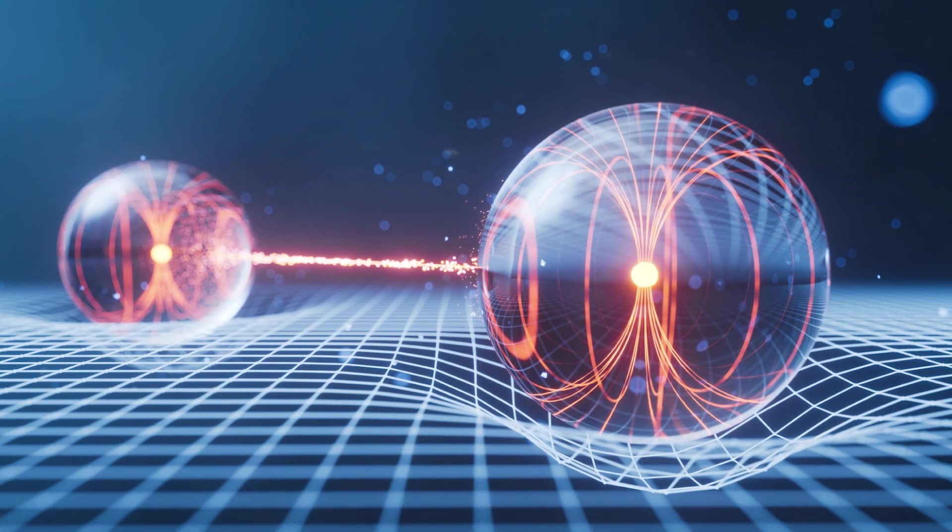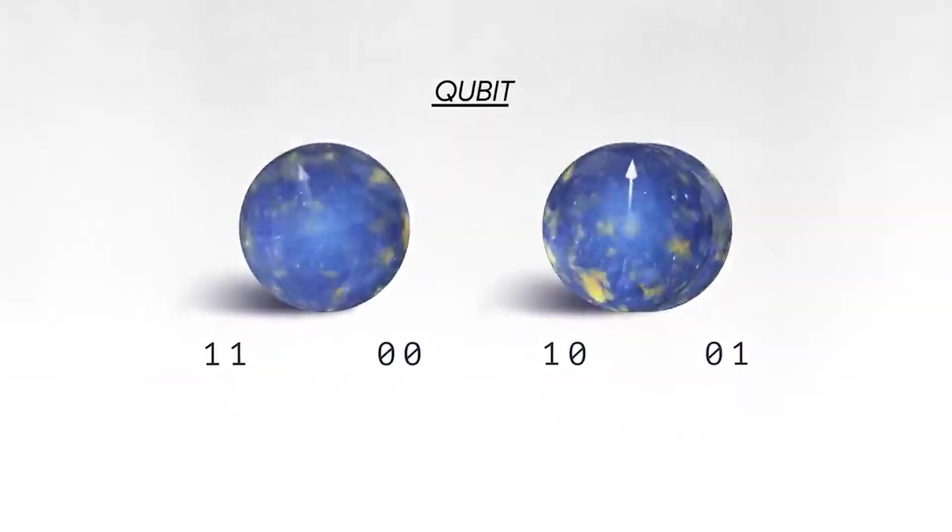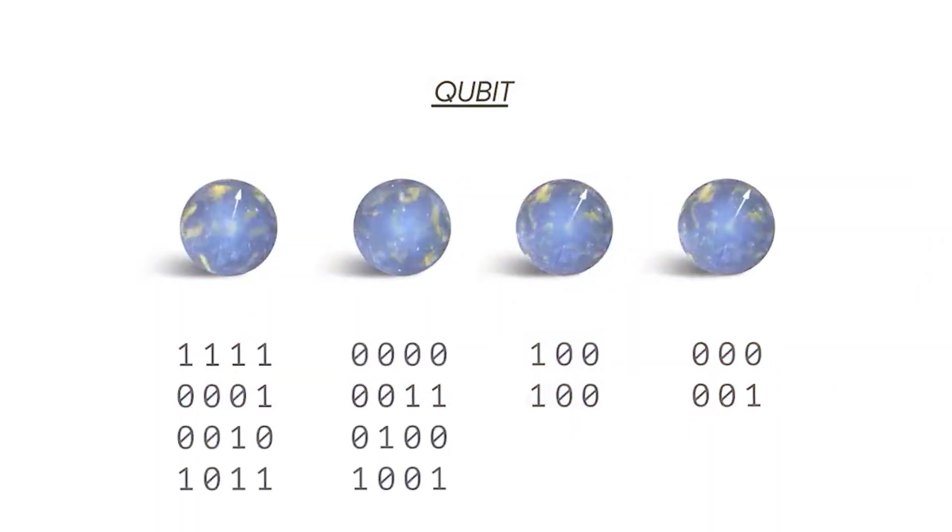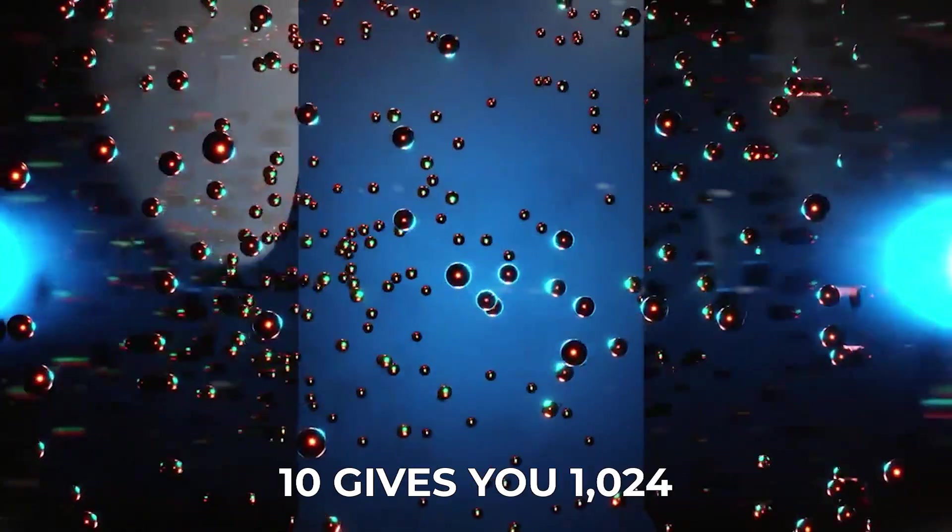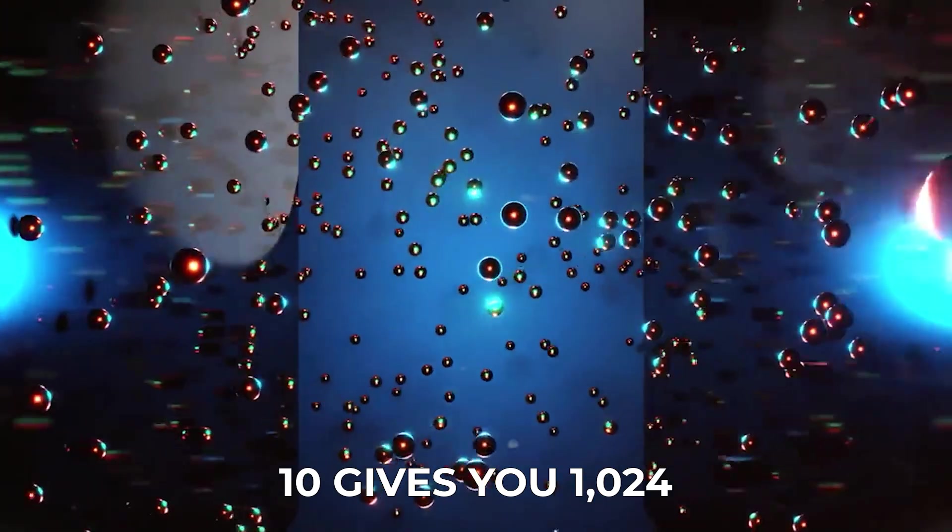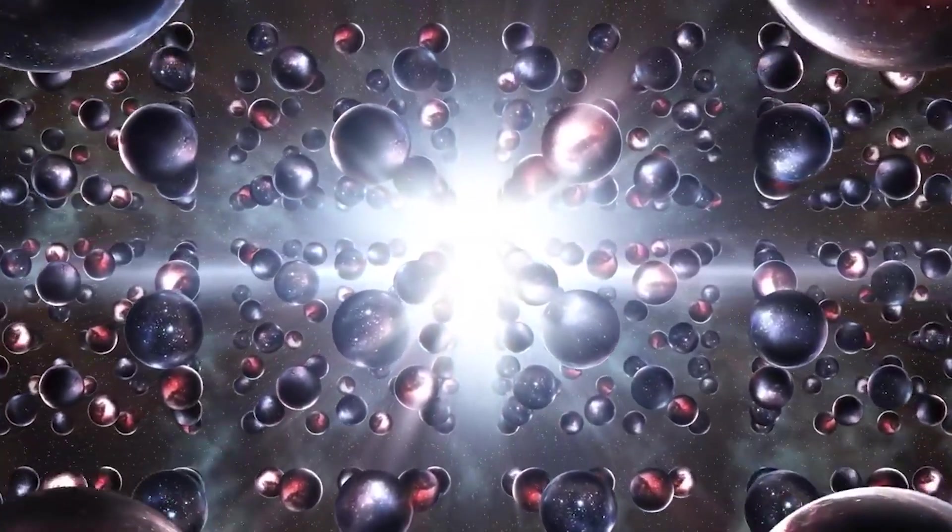There's more. Qubits don't just allow more possibilities, they multiply them. Add two qubits together, and they can represent four states. Add three, and you get eight. Ten gives you 1024. With just a few hundred qubits, you're looking at more combinations than atoms in the known universe.